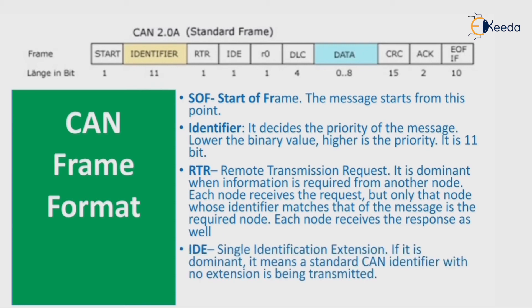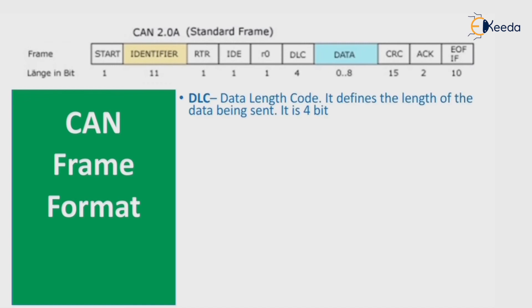IDE — Single Identification Extension — if it is dominant, it means a standard CAN identifier with no extension is being transmitted. R0 is the reserve bit 0.